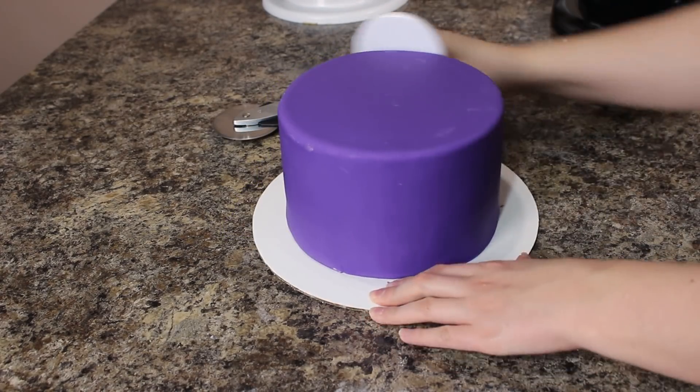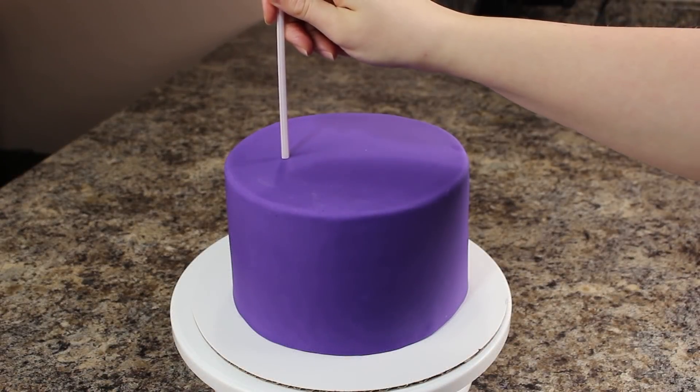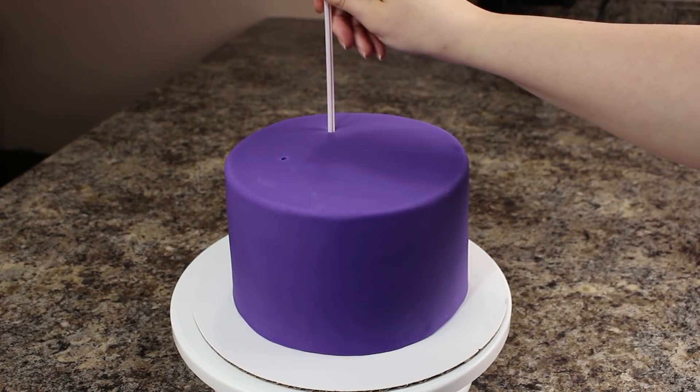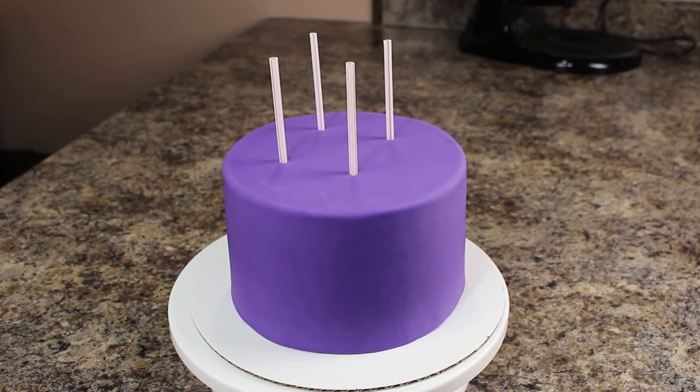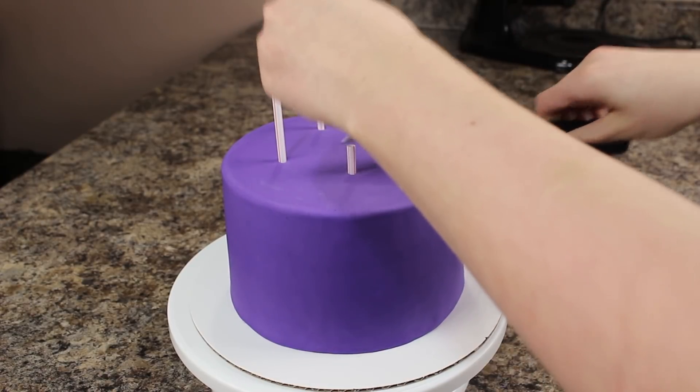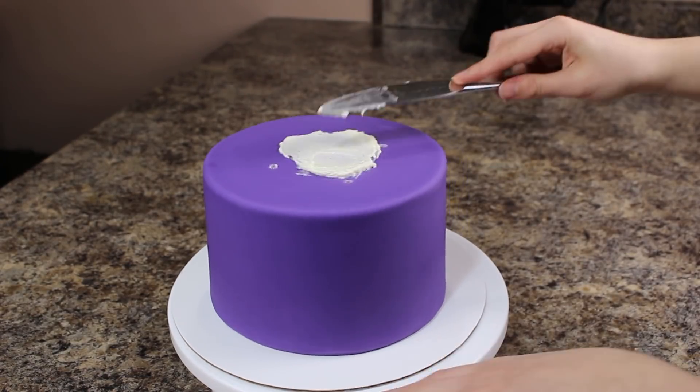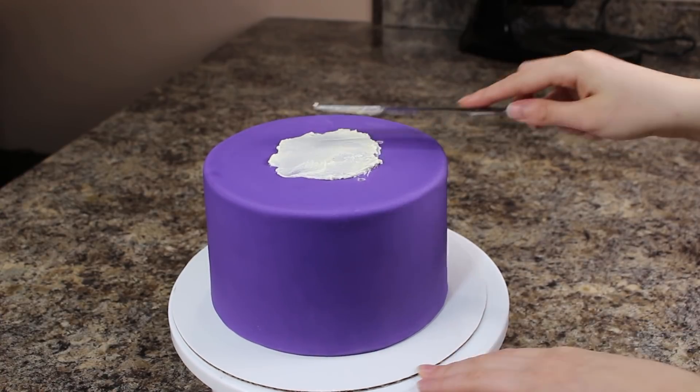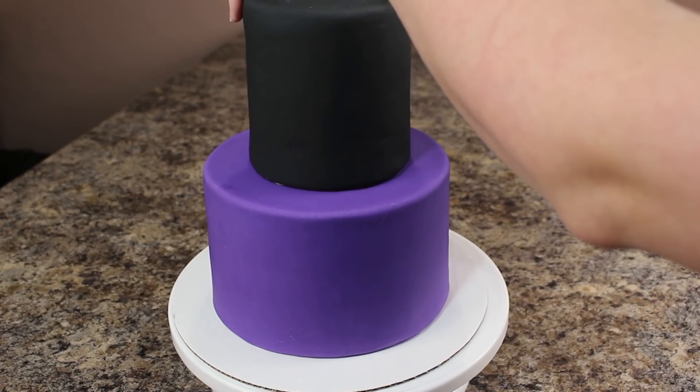My cake is going to be two tiers, so I need to add some supports. Because this cake is so small, I'm just going to use regular straws, but if you're doing a larger cake you need to use wooden dowels or those thicker bubble tea straws. I've spaced them out evenly in my bottom tier and then I'm just cutting them to size so that they are flush with the top of my cake. I've added a schmear of buttercream and then placed my black four inch tier on top and I'm just centering that.